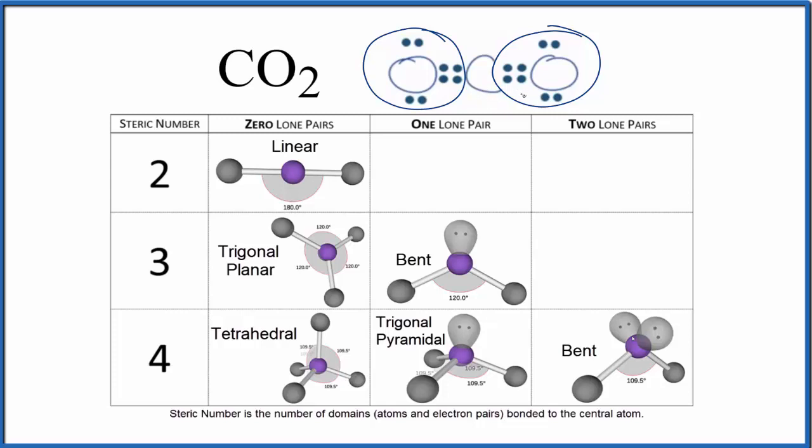And there aren't any lone pairs, so we have a steric number of two. That means we have a linear molecular geometry. We have a steric number of two and no lone pairs, so it's going to be linear.